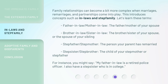Family relationships can become a bit more complex when marriages, remarriages, and partnerships come into play. This introduces concepts such as in-laws and stepfamily. Let's learn these terms. Father-in-law, mother-in-law: the father or mother of your spouse. Brother-in-law, sister-in-law: the brother or sister of your spouse, or the spouse of your sibling. Stepfather, stepmother: the person your parent has remarried. Stepsister, stepbrother: the child of your stepmother or stepfather. For instance, you might say: My father-in-law is a retired police officer. I also have a stepsister who is in college.